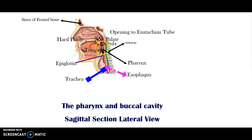Once the bolus reaches the pharynx, the involuntary phase takes over. At this point, the tongue remains in its location to block the area of the mouth so the bolus won't leave. The soft palate lifts and blocks the nasal cavity so the bolus won't come out of your nose. The epiglottis folds up and covers the trachea so the bolus won't enter the trachea. All three openings where the bolus could go are closed, except for the fourth — the esophagus — and the bolus then enters the esophagus. Muscles of the esophagus will squeeze around the bolus and force it into the stomach.